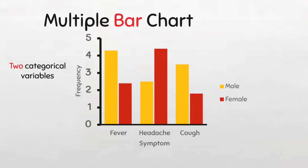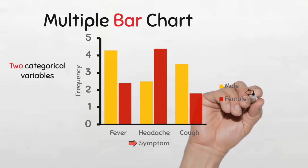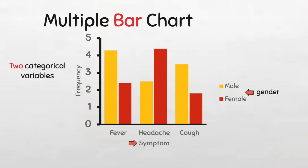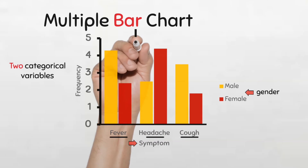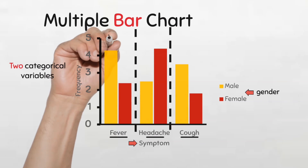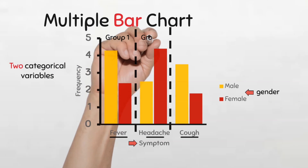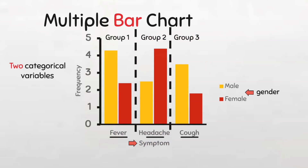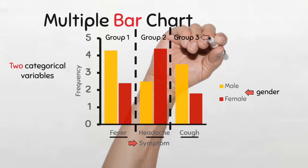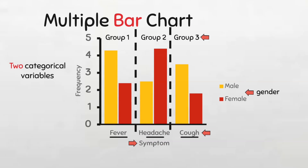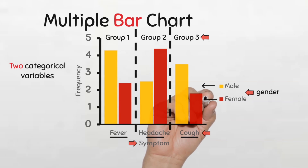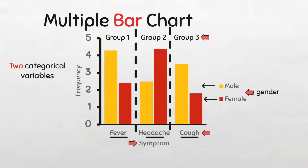In this example, we can see that we have two categorical variables, symptom and gender. Symptom is the first variable with three main categories: fever, headache, and cough. Each main category is a distinct group made up of multiple bars. In each group that represents a category of the first variable, there are two bars each representing subcategories of the second variable, gender. So in group three, for example, the main category is cough and the subcategories are male and female.